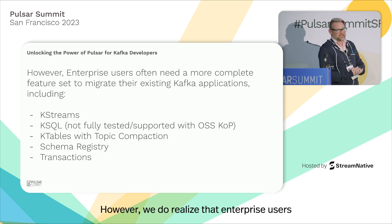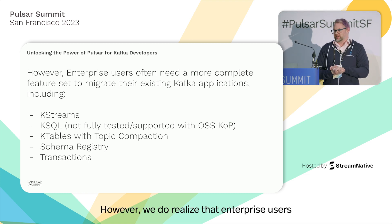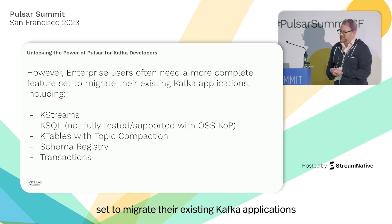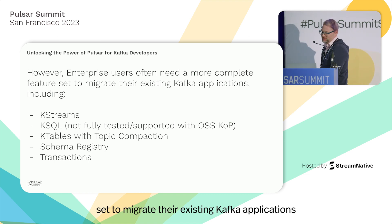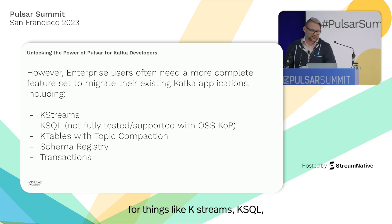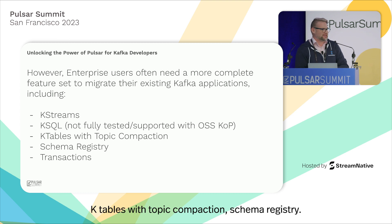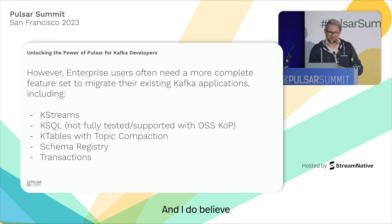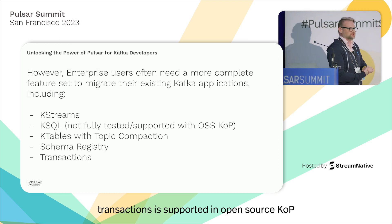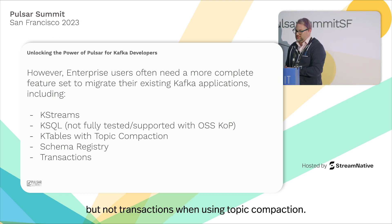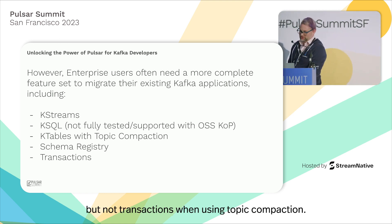However, we do realize that enterprise users often need a more complete feature set to migrate their existing Kafka applications — things like KStreams, KSQL, KTables with topic compaction, schema registry. I do believe transactions are supported in open source KOP, but not transactions when using topic compaction.